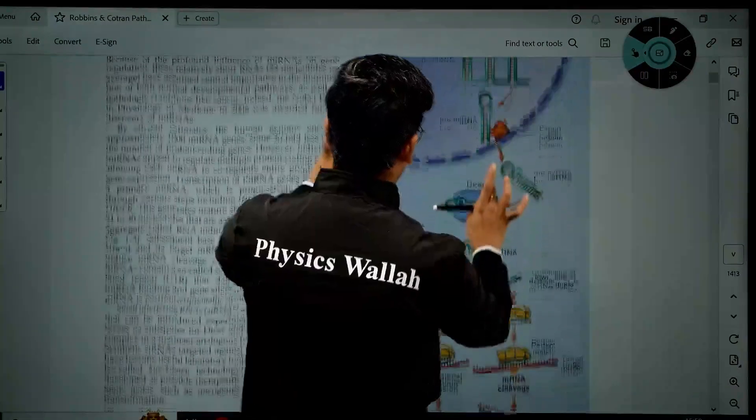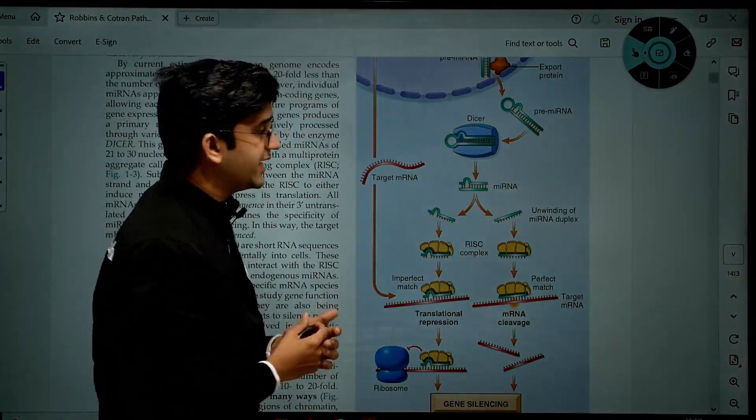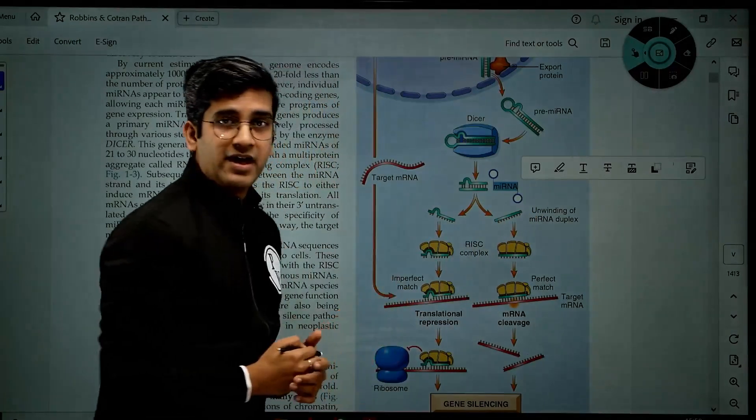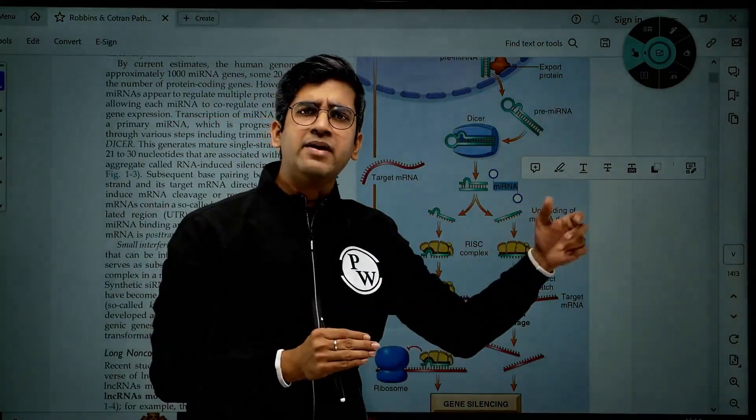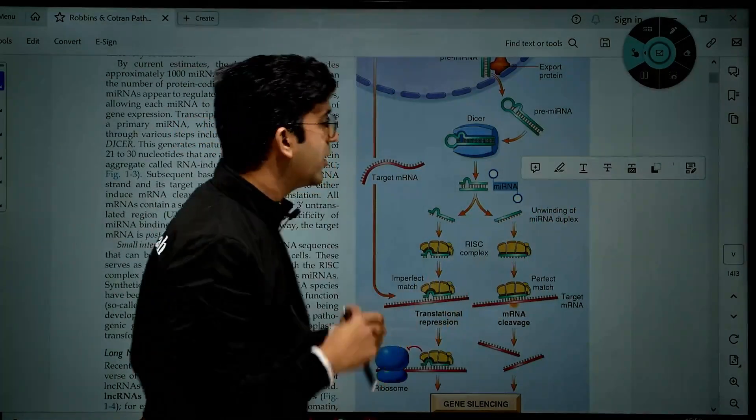Let me zoom it here, let me go to the below part. With the help of protein called Dicer, it becomes a mature miRNA. miRNA is a mature one, pre-miRNA is obviously a precursor miRNA or a micro RNA.